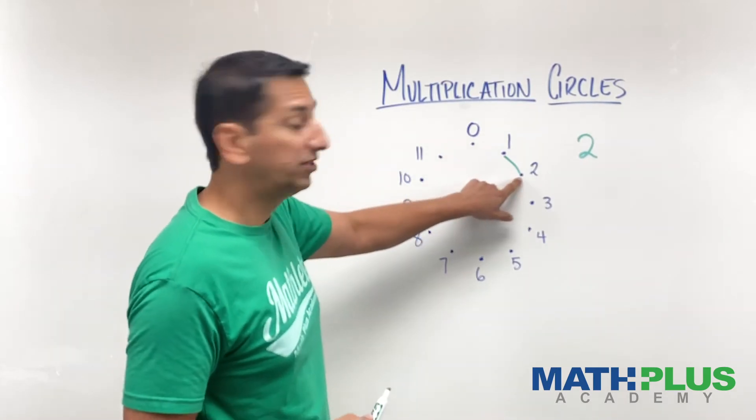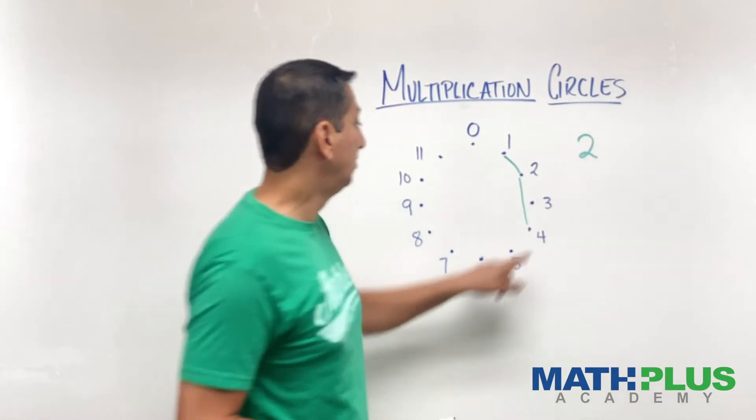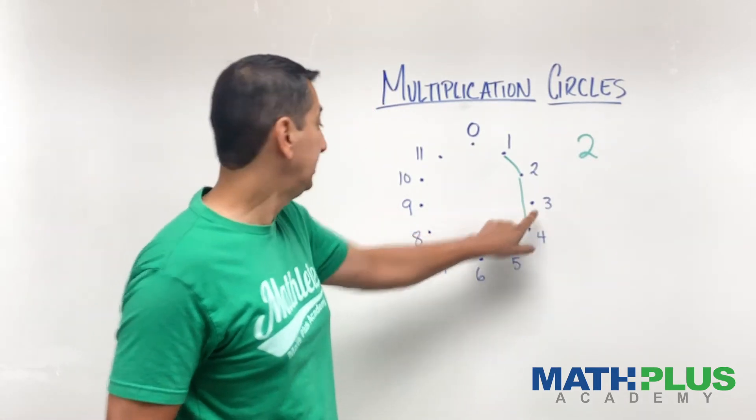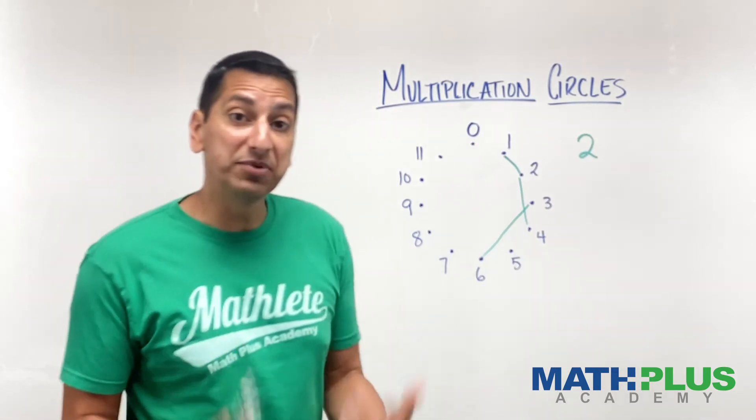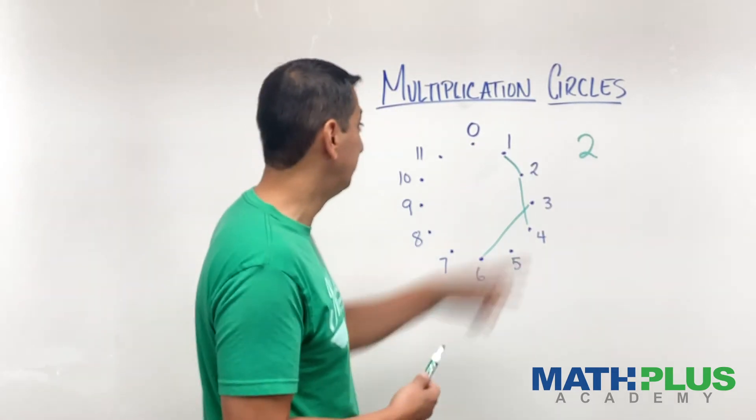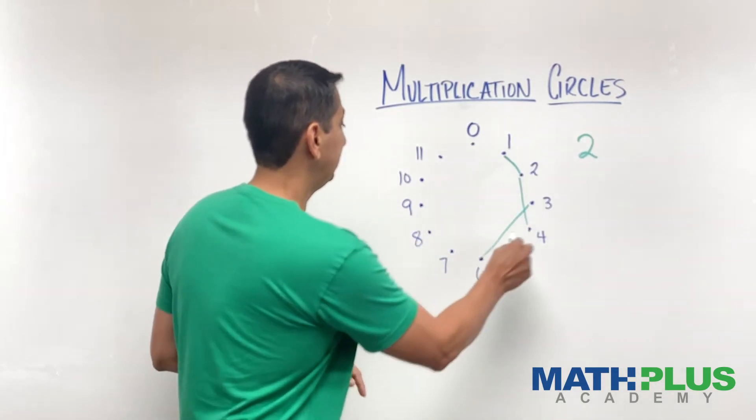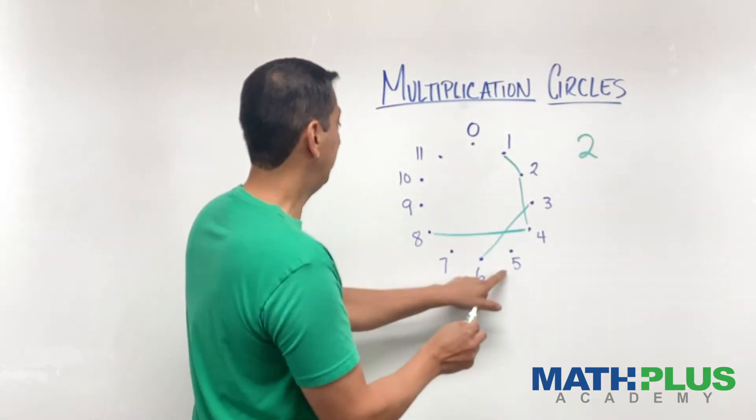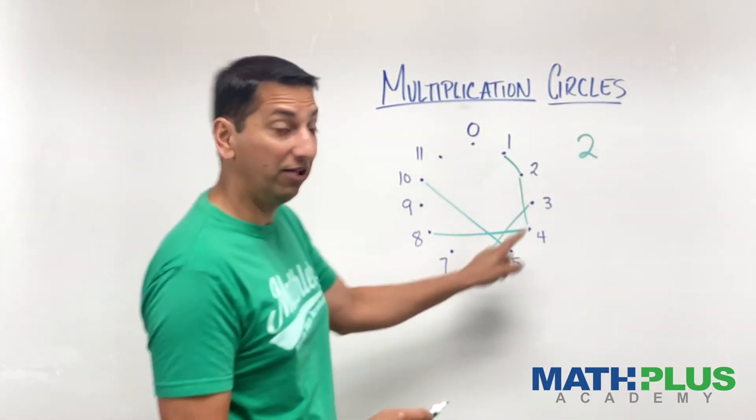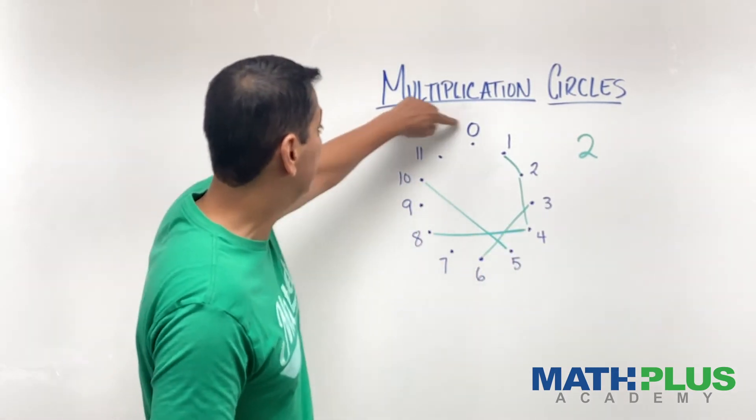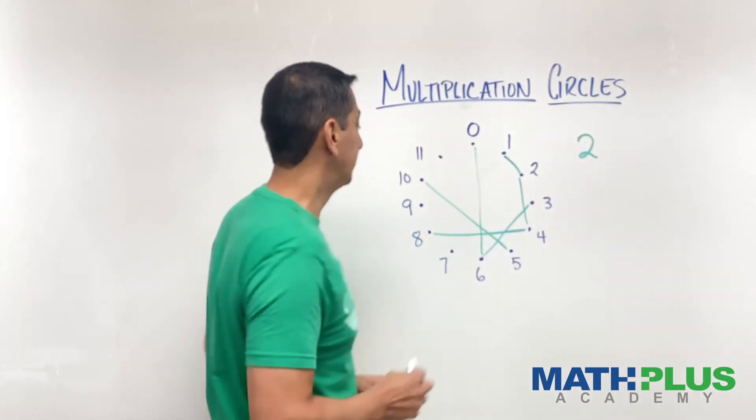And then I keep going. What's 2 times 2? 4. So we're going to connect these. What's 3 times 2? 6. Connect those. And so we're getting a representation of our multiplication table for 2s in this little circle chart. 4 times 2 is 8. 5 times 2 is 10. 6 times 2 is 12. Now keep in mind, this is 11, 12, so I'm going to go up to the top just like that.